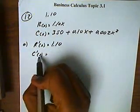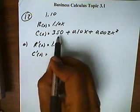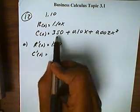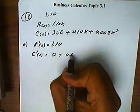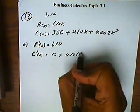Now, we're going to need the marginal cost, so I'm going to take a derivative of the cost right now. So the derivative of the 350 is 0. The derivative of x is 1, so this will be 0.10 times 1.